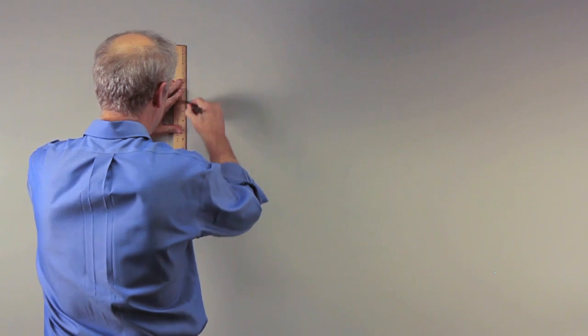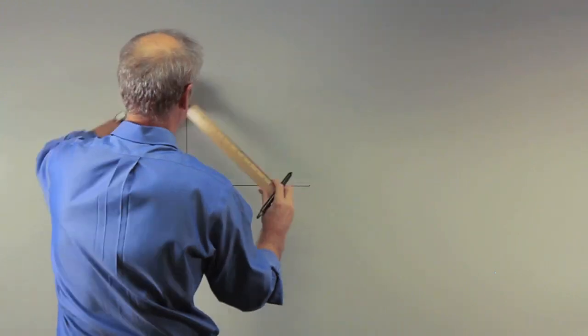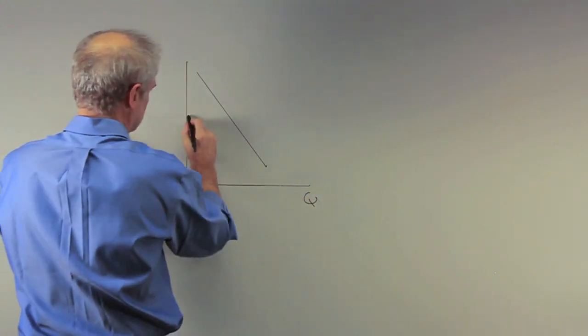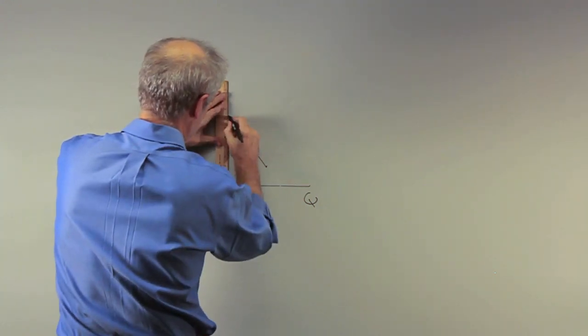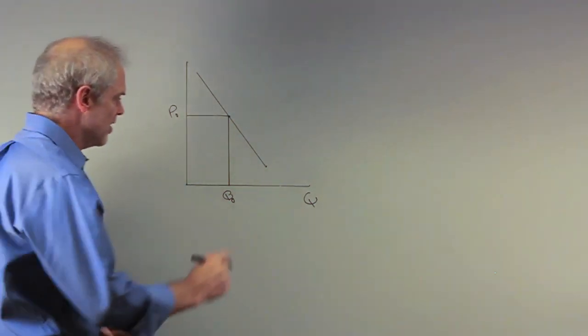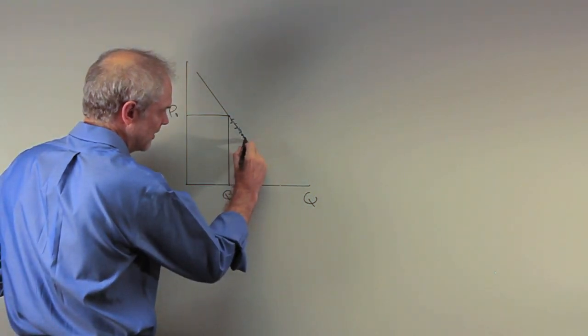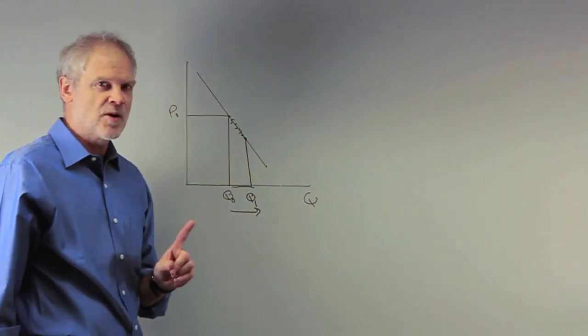Here it says an increase in quantity demanded. So all I really have to do is just draw a demand curve. Here's Q, we'll call this P0, we'll call this Q0. And now they're saying, what's an increase in quantity demanded? Well, an increase in quantity demanded is going to push us out here. It's a movement along the demand curve from Q0 to Q1. That's an increase in quantity demanded.